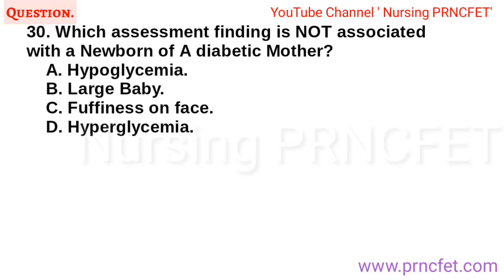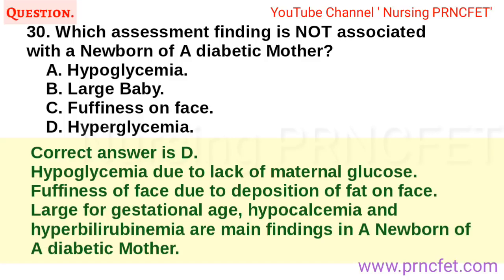Question 30: Which assessment finding is not associated with a newborn of a diabetic mother? A. Hyperglycemia. B. Large baby. C. Puffiness on face. D. Hyperglycemia. Correct answer is D. Hyperglycemia due to excess maternal glucose, puffiness of face due to deposition of fat on face, large for gestational age. Hypoglycemia and hyperbilirubinemia are main findings in a newborn of a diabetic mother.